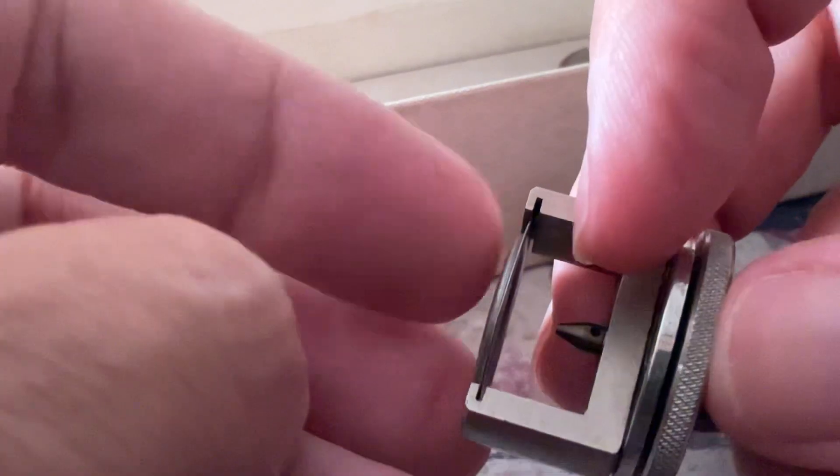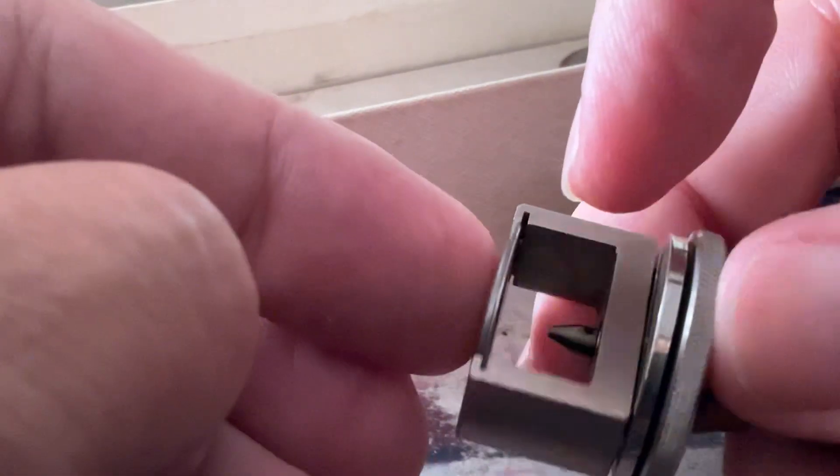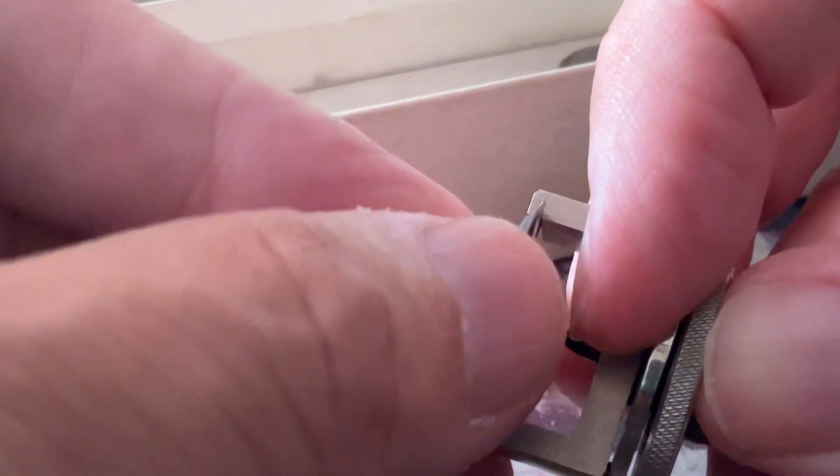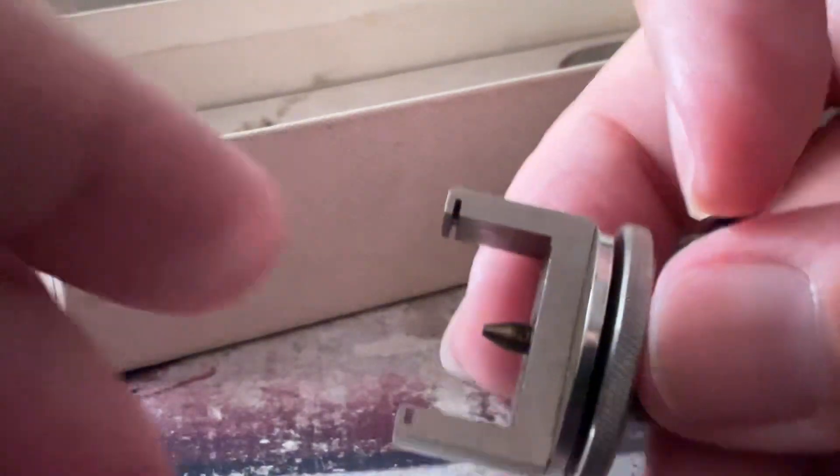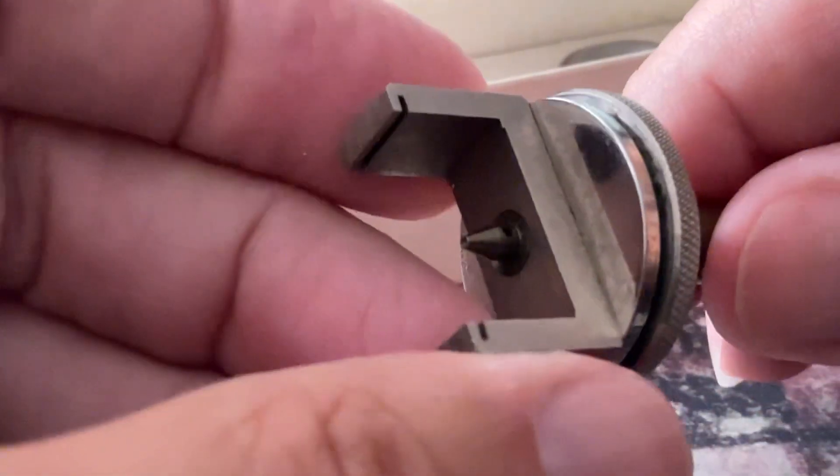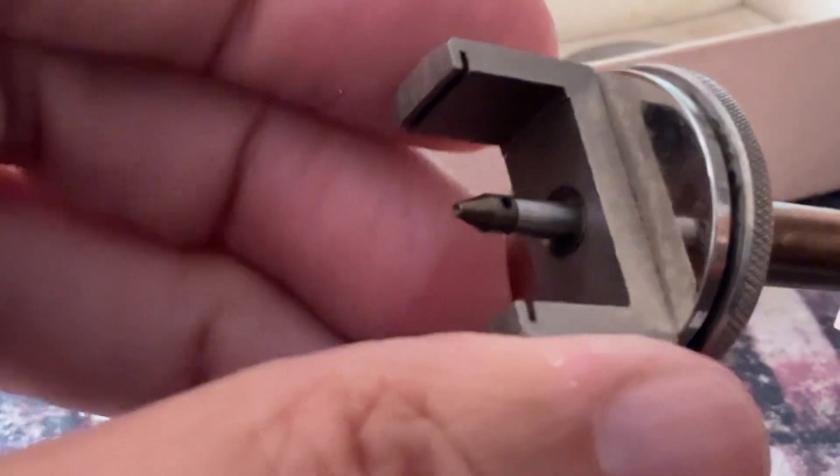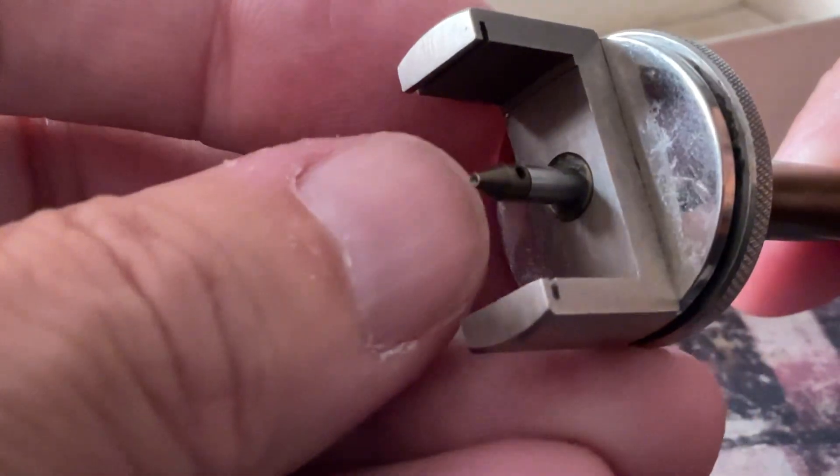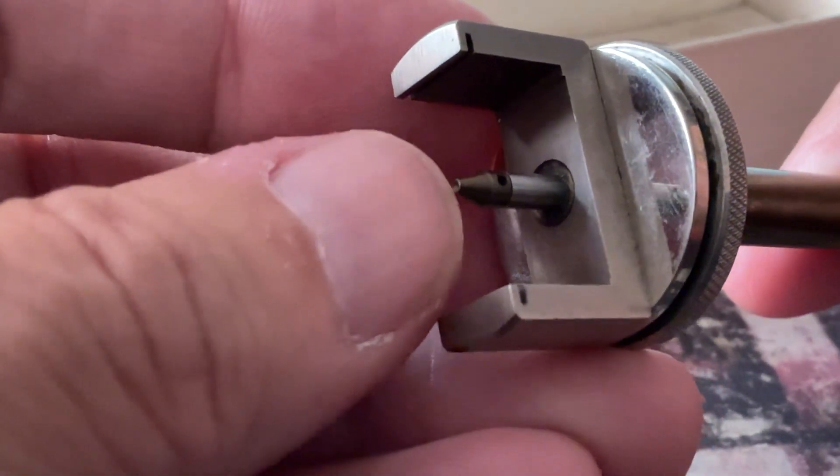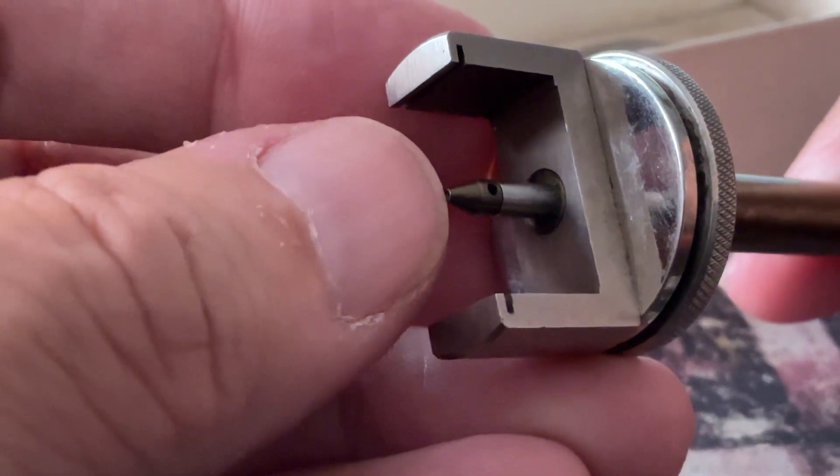And then you would use your lathe itself to align the hole to make sure it's completely centered. And then the balance staff would go between the disc and this shaft here. And if I look at this shaft here, you can see that it has a very small hole in the middle, kind of like a J-Cot tool to receive the pivot on the other side.